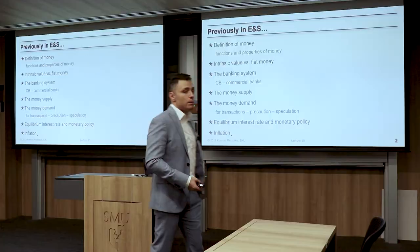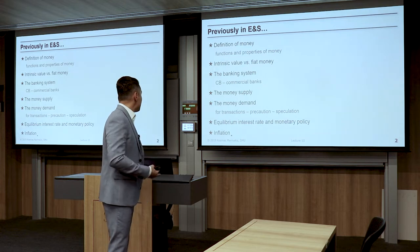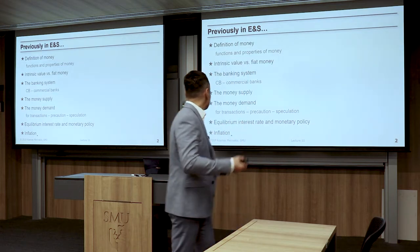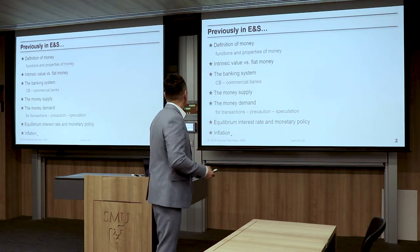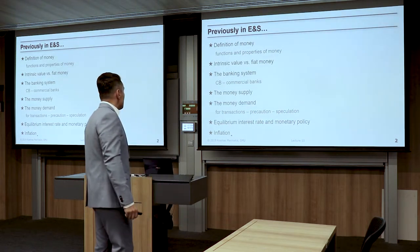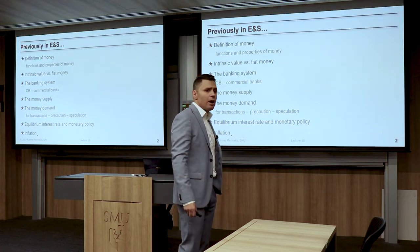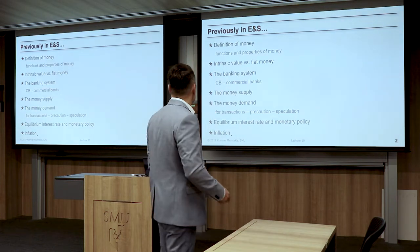Then we talked about the banking system — that we have a central bank that governs the whole money market, and then we have commercial banks that are intermediators between investment and saving. Then we talked about money supply and money demand, which is split into three different demands: money demand for speculation, for precaution, and for transactions. Then we talked about the equilibrium interest rate, monetary policy, and finally inflation — the good and bad things about it.